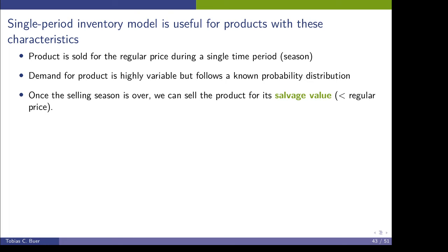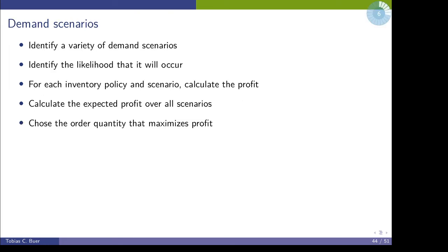How do we proceed when we want to apply the news vendor model? First, we have to identify a variety of demand scenarios. For each scenario we have to identify a likelihood — a chance that this scenario will occur. Then we can calculate the profit or the payoff for each inventory policy and scenario. We calculate the expected profits over all scenarios, and in the end we select the scenario with the highest expected profit as the action that we want to implement.